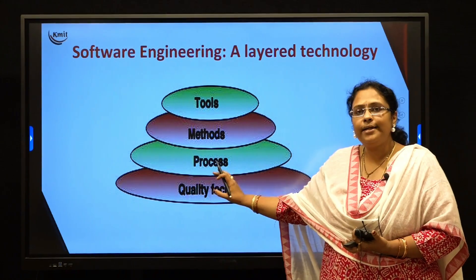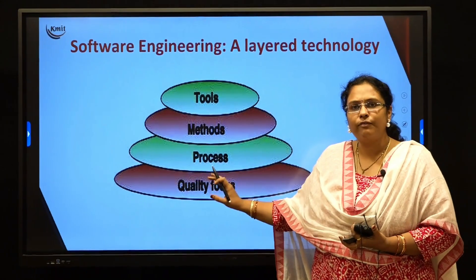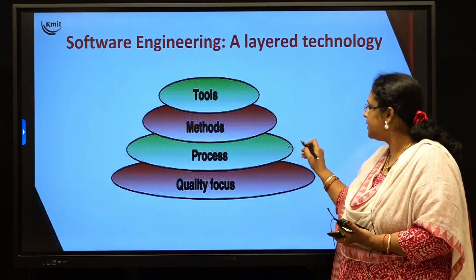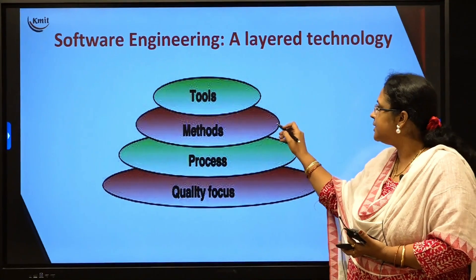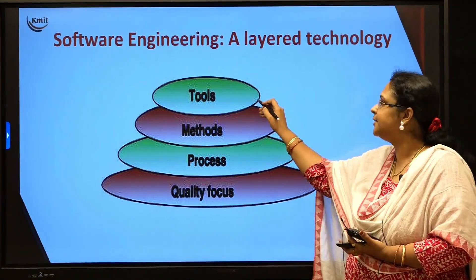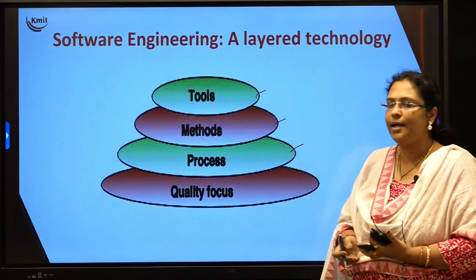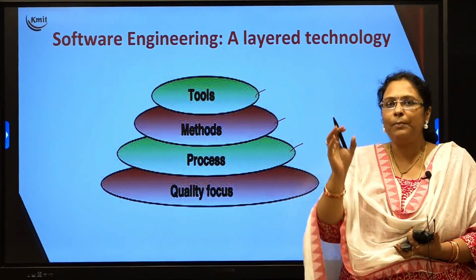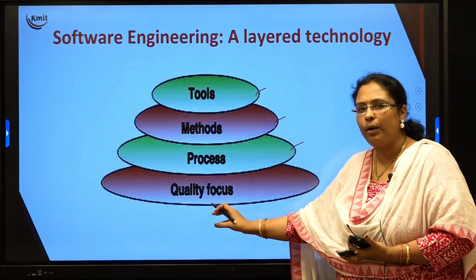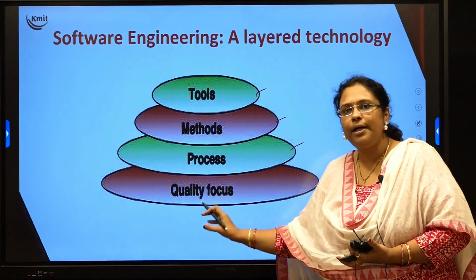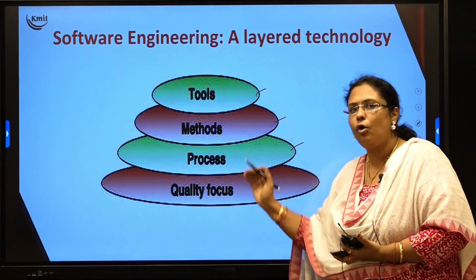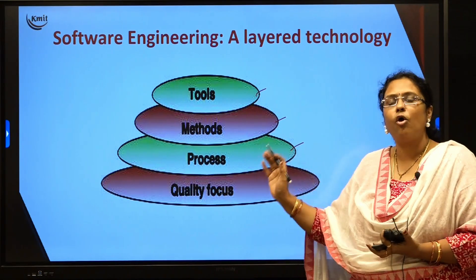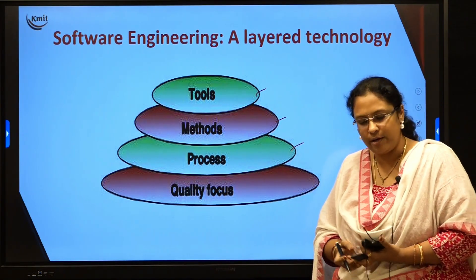The layer technology of software engineering consists of three layers. The first layer is called the process, the second layer is called the methods, and the third layer is called the tools. All three layers mainly focus on quality. Quality is said to be the bedrock — the base — for all three layers of software engineering.